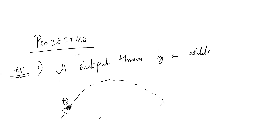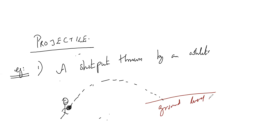This is the ground level. So this is a classic example — the shot put follows a parabolic curve. One more example: a javelin thrown by an athlete. I think everyone knows what a javelin is.